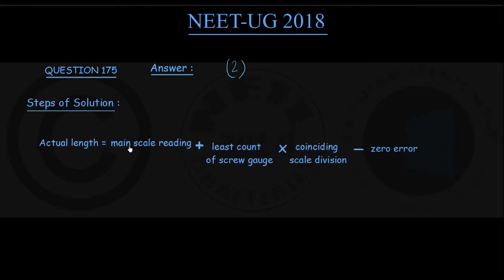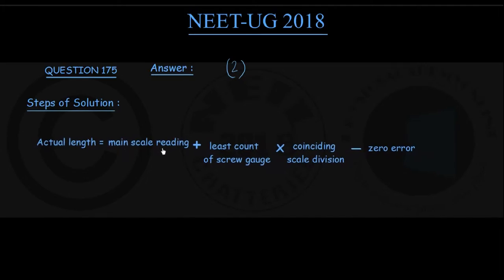The actual length, in this case the diameter of the steel ball, is equal to main scale reading plus least count of screw gauge multiplied by coinciding scale division minus zero error.